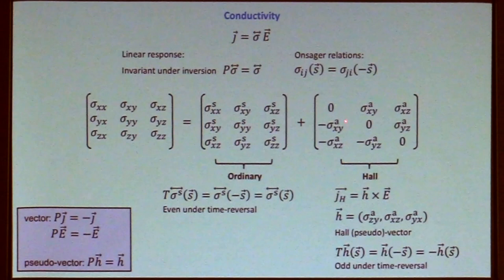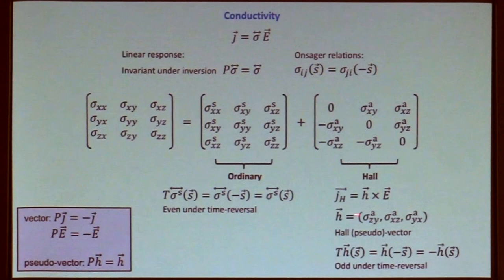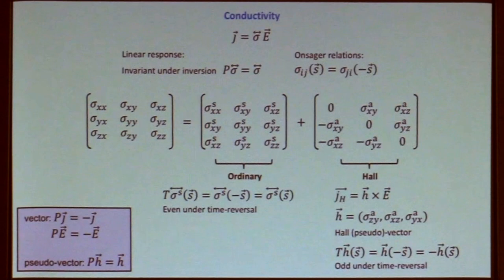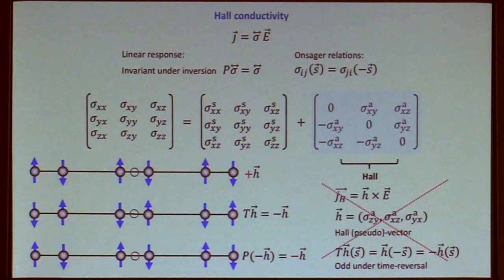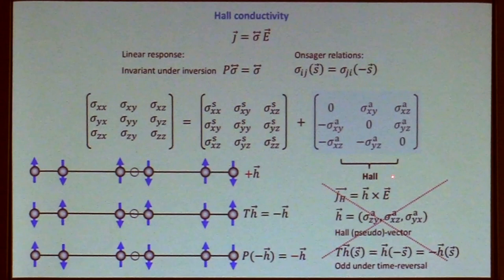For the antisymmetric component, there are only three independent components, which can be arranged as a three-component vector — more precisely a pseudo-vector, which doesn't change sign under space inversion. So we have: the ordinary component, even under time reversal and insensitive to reversing the magnetic order; and the Hall component, very sensitive to reversing the magnetic order. When you want to be sure that what you measure is of magnetic origin, you would obviously pick the Hall effect.